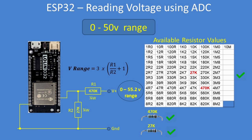For a 0 to 50 volt range: a 470k and a 27k resistor, actual range 0 to 55.2 volts. For 0 to 100 volts: a 470k and a 15k, giving a range of 0 to 97 volts — just below the target due to preferred resistor values. Alternatively, using a 470k and a 12k gives a range of 0 to 120.5 volts.